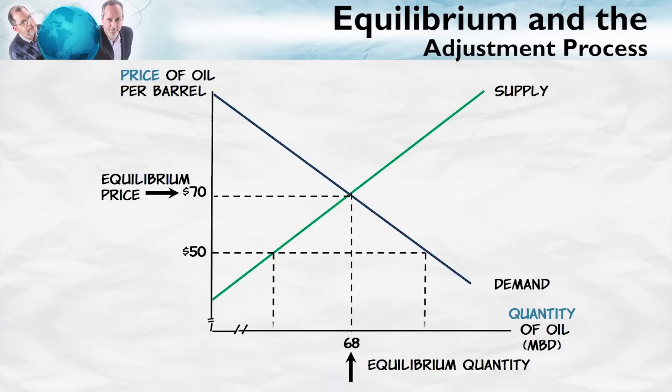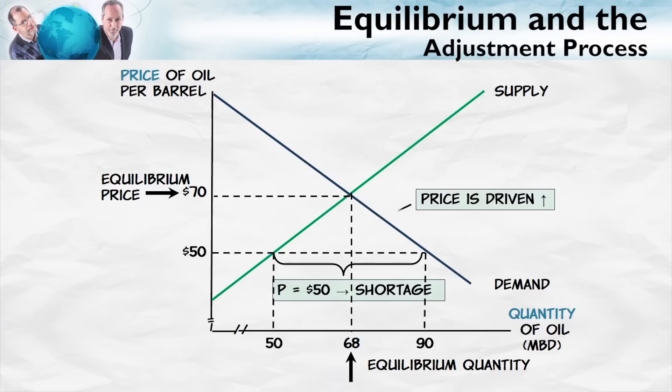What if the price is less than the equilibrium price? In this case, the quantity demanded will exceed the quantity supplied. Buyers will want the good, but there won't be enough of the good to go around — in other words, there'll be a shortage. Because the buyers have to compete to obtain the good, they're going to push the price up, again, towards the equilibrium price.